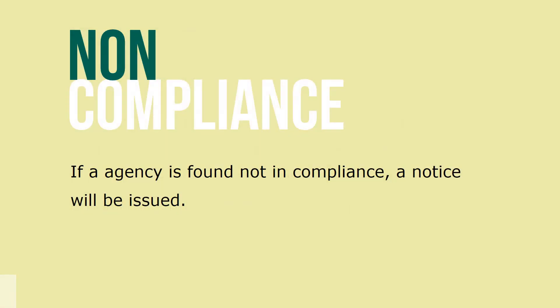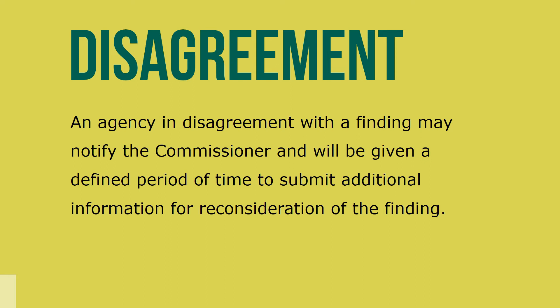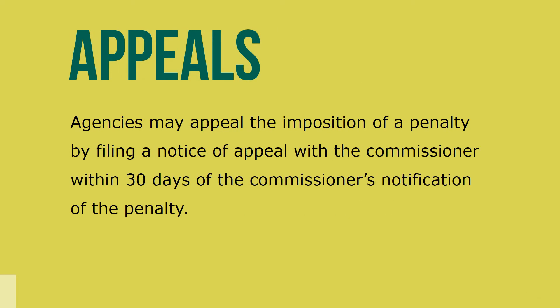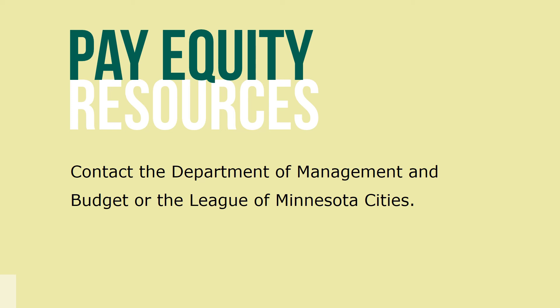If an agency is found to not be in compliance, a notice will be issued. An agency that disagrees with such a finding may notify the commissioner and will be given a defined period of time during which additional information may be submitted for reconsideration of the finding. Agencies may appeal a penalty by filing a notice of appeal with the commissioner within 30 days of the commissioner's notification of the penalty. No penalty may be imposed when the appeal is pending. Agencies may contact the Minnesota Department of Management and Budget Human Resource Management Division for specific assistance. The League of Minnesota Cities' Human Resources and Benefits Department will also discuss any information or questions that you might have.